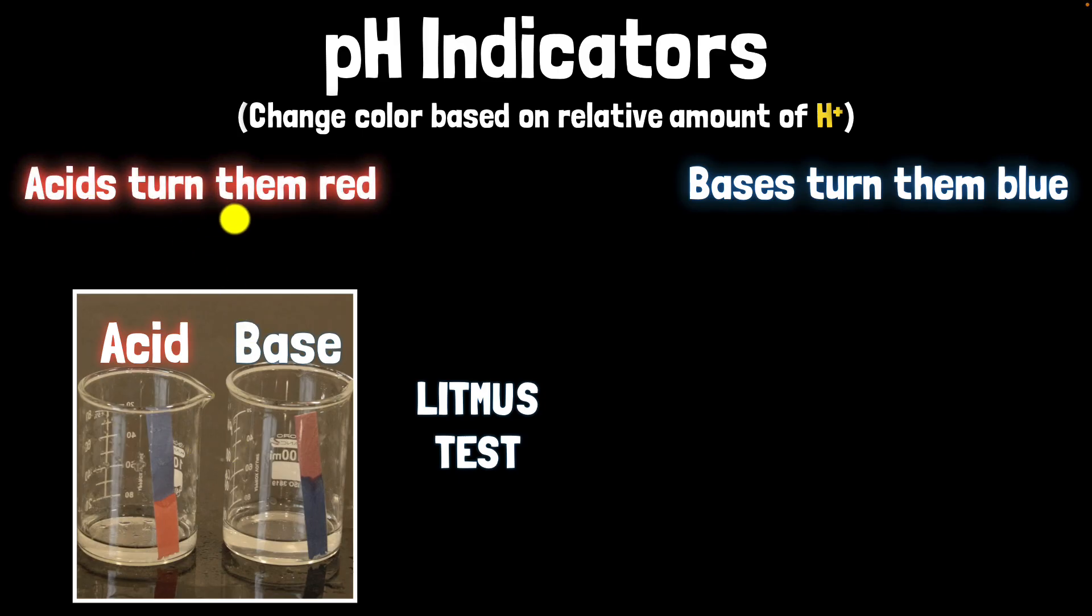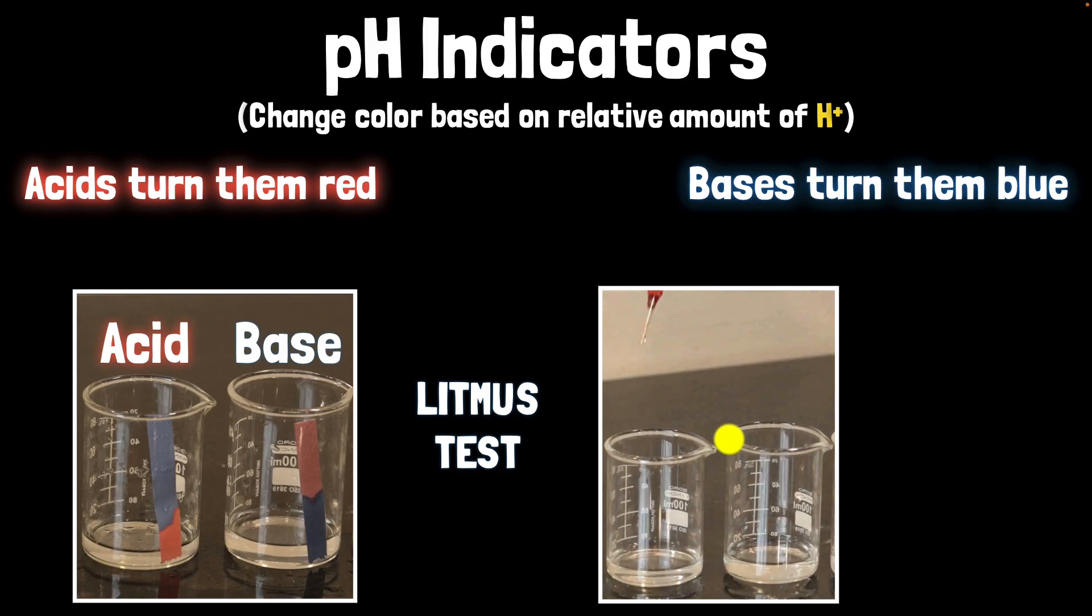In general, we can think that acids turn things to red in color. We also have litmus solutions with us. So if you put red litmus and it turns blue, I know that that is a base. And similarly, if blue litmus gets turned to red, I know that that is an acid.